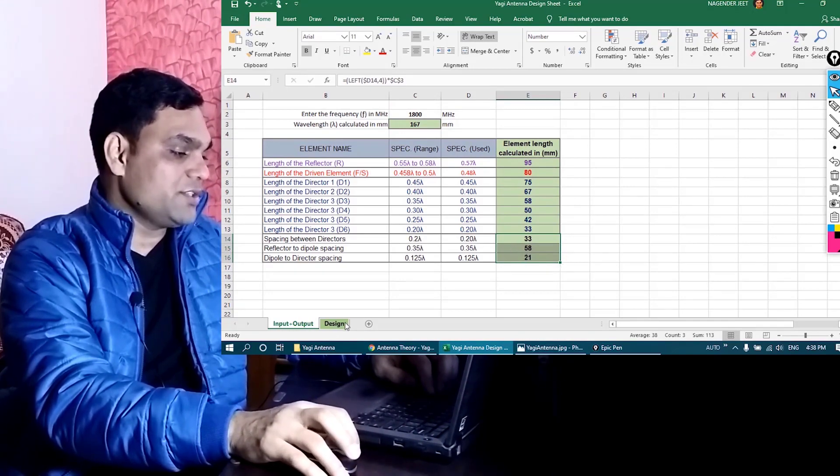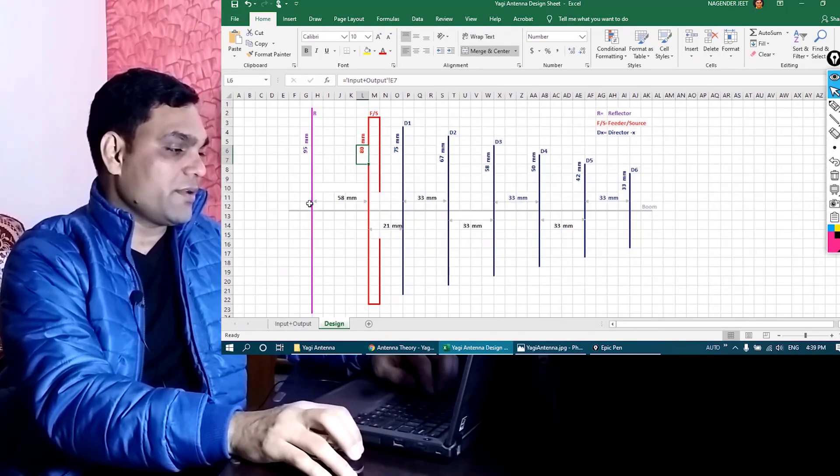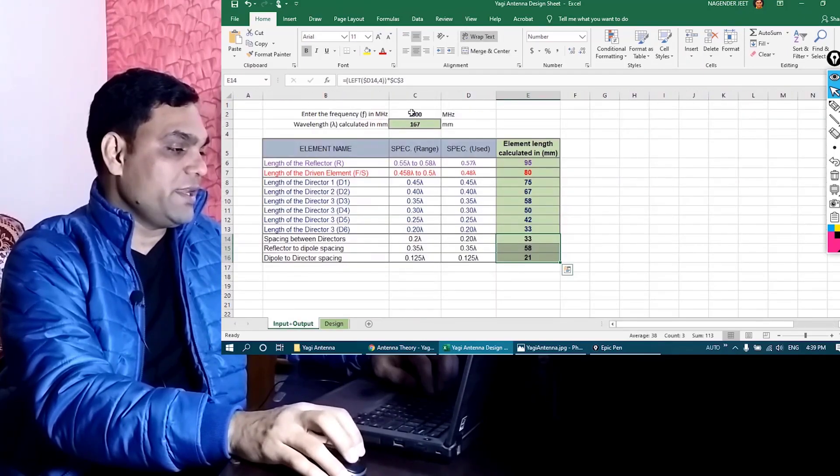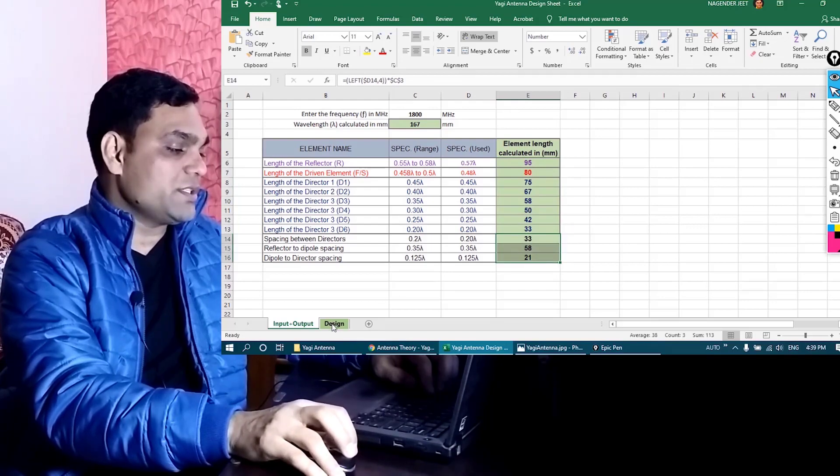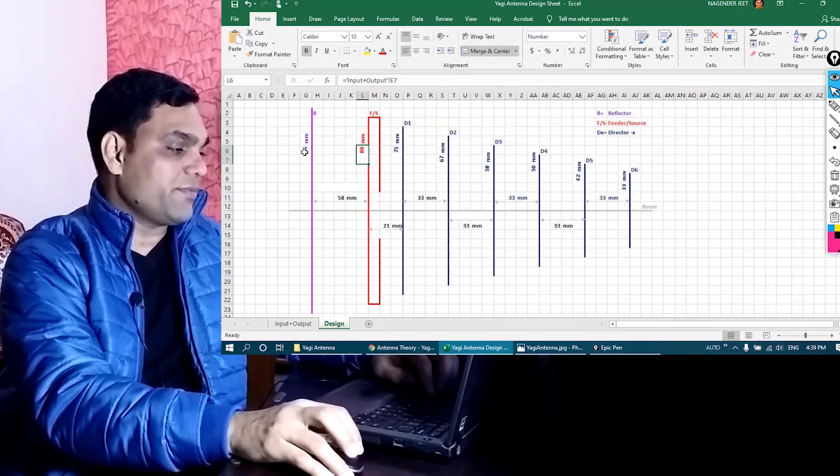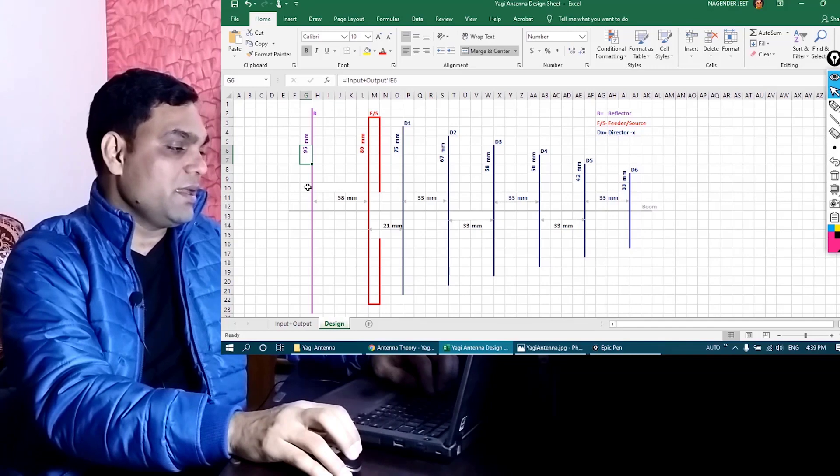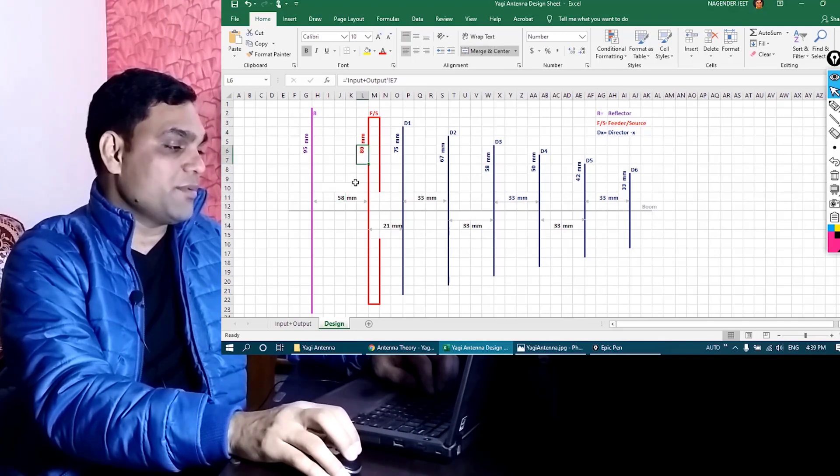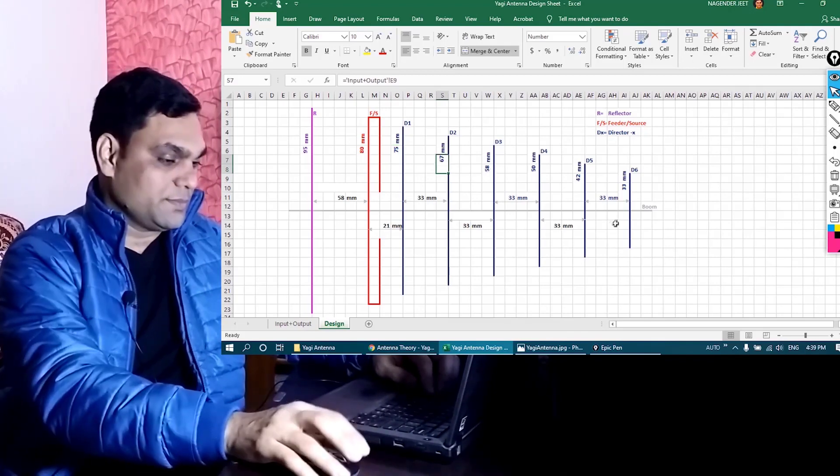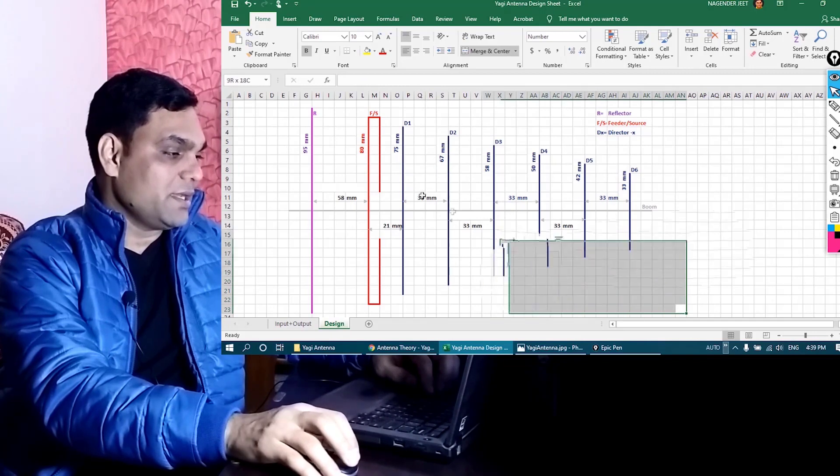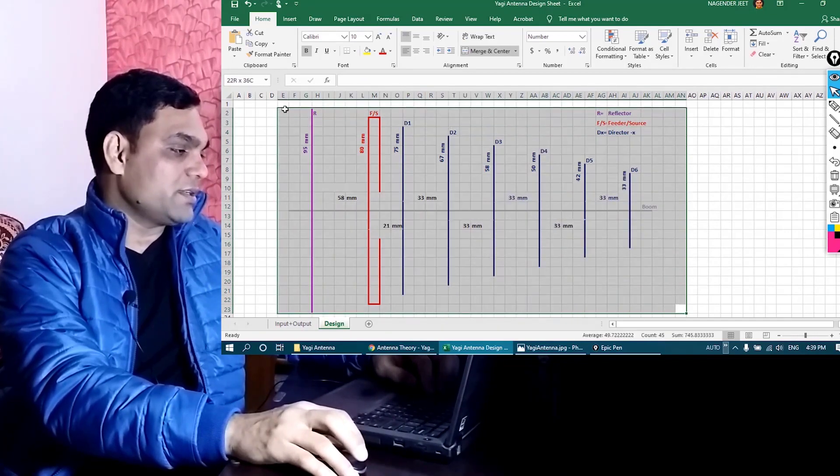In fact there is a design sheet as well where you can see how it looks like. So for example for 1800 MHz band these are the lengths of the elements and the spacing which is shown here graphically. So the reflector element for 1800 MHz has to be 95 mm in size, separated by 58 mm to the dipole 80 mm size, and then the director number 1 is 75 mm, director number 2 is 67 mm and so on. Now that we have the design in place let us print it which we will use at the time of construction.